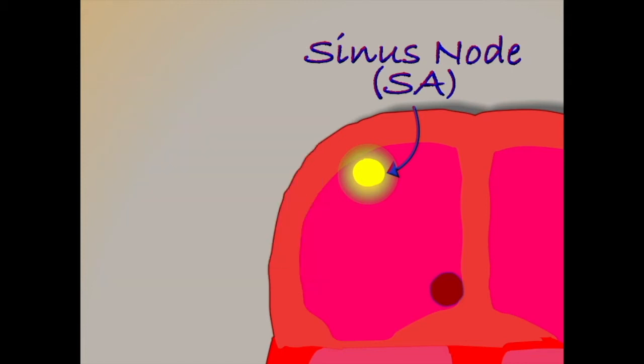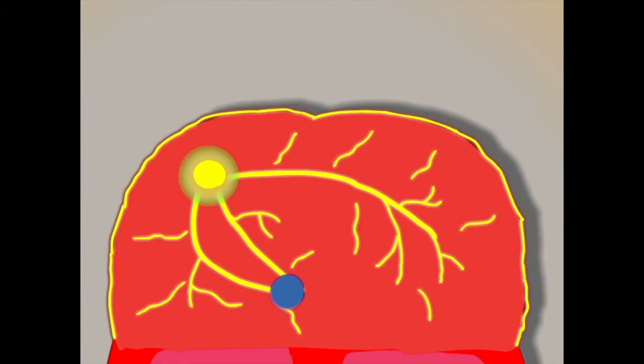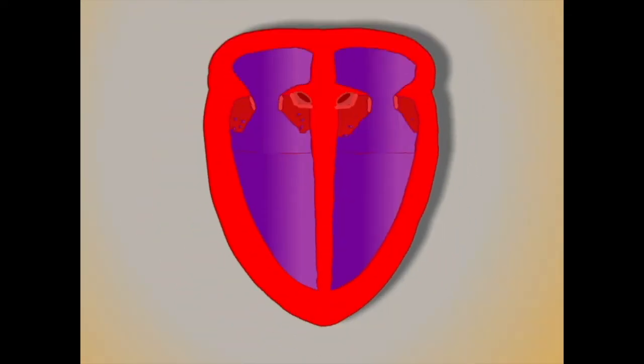From the sinus node, the electricity is transmitted along several pathways throughout the atrium, causing the top chambers to contract, pushing blood down into the ventricles below.